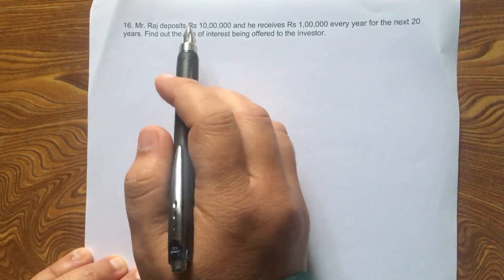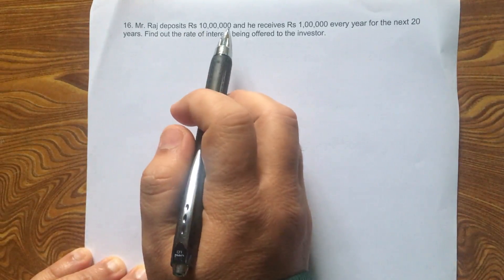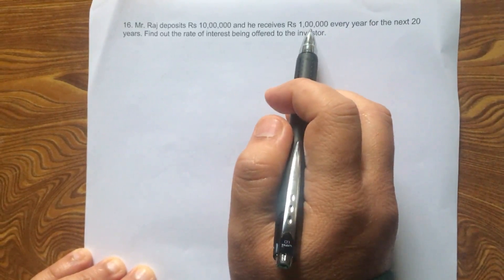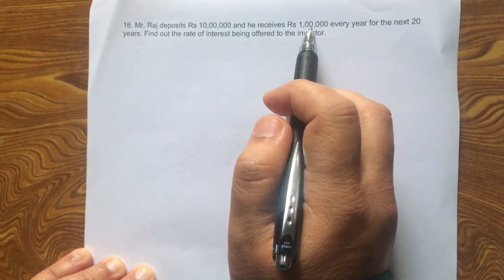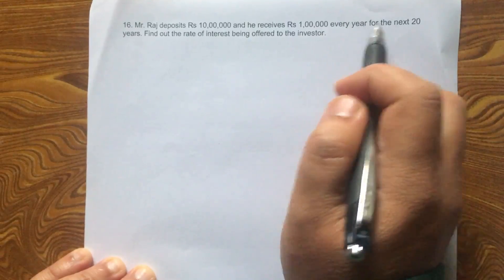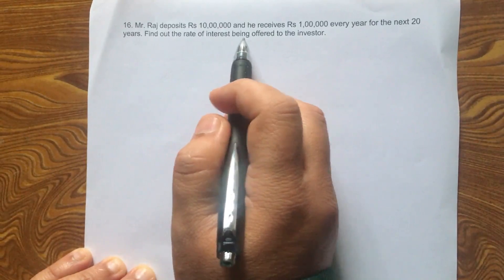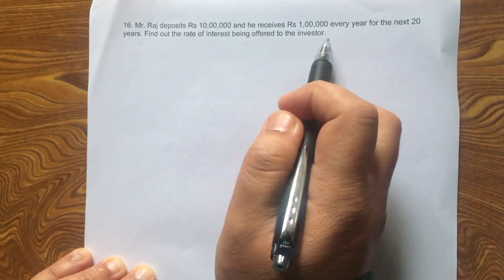Mr. Raj deposits rupees 10 lakhs or rupees 1 million and he receives rupees 1 lakh or rupees 100,000 every year for the next 20 years. Find out the rate of interest being offered to the investor.